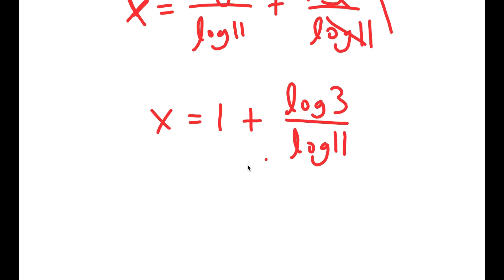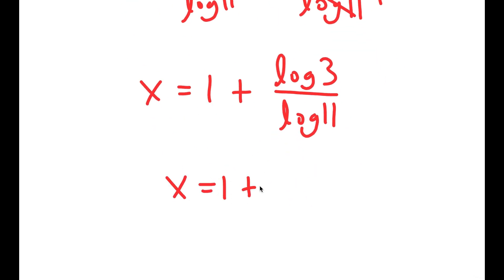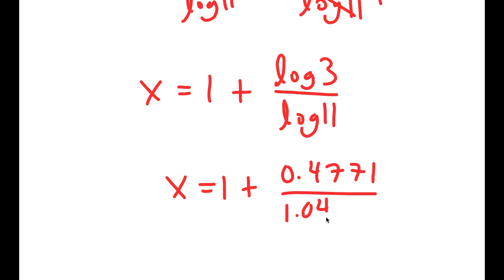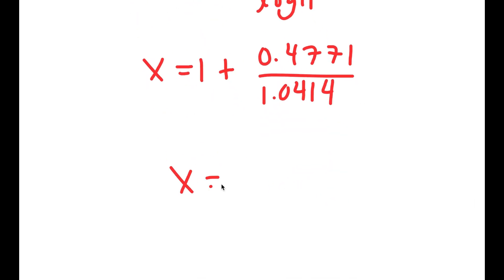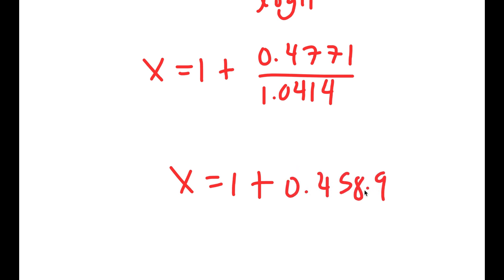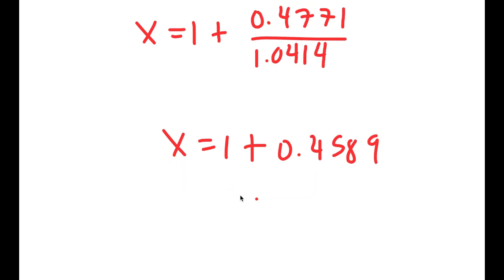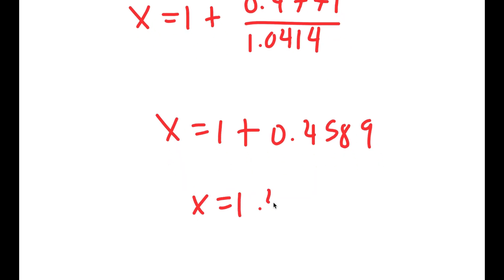Now log 3 is equal to 0.4771 and log 11 is equal to 1.0414. So I get x is equal to 1 plus 0.4589, which gives x is equal to 1.4589.